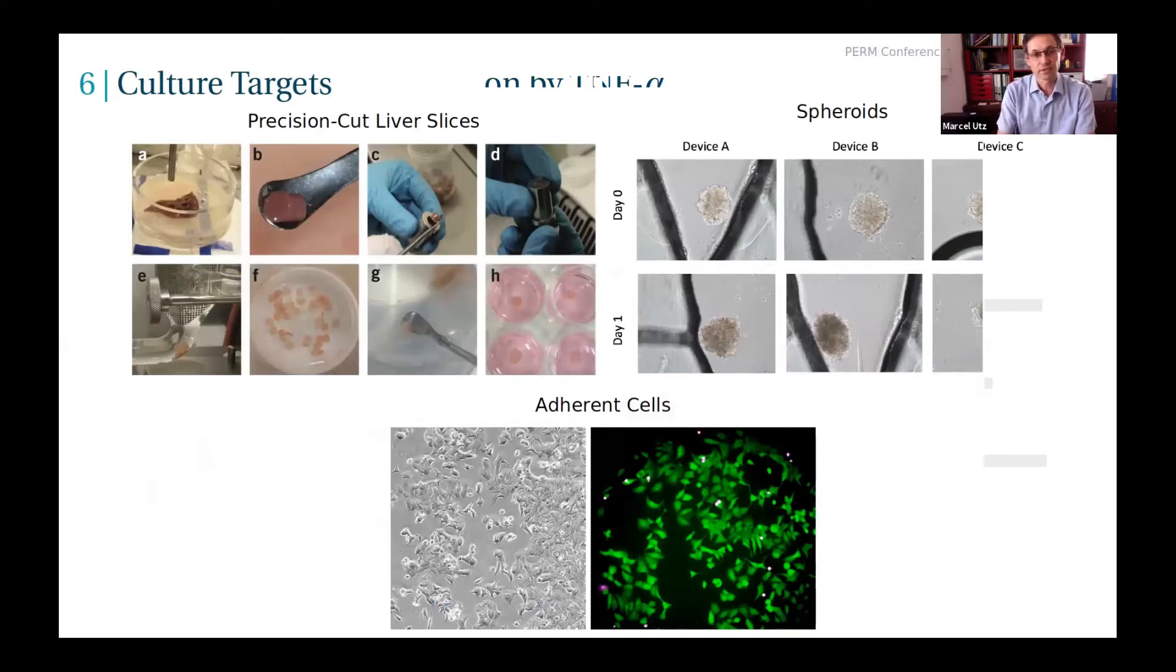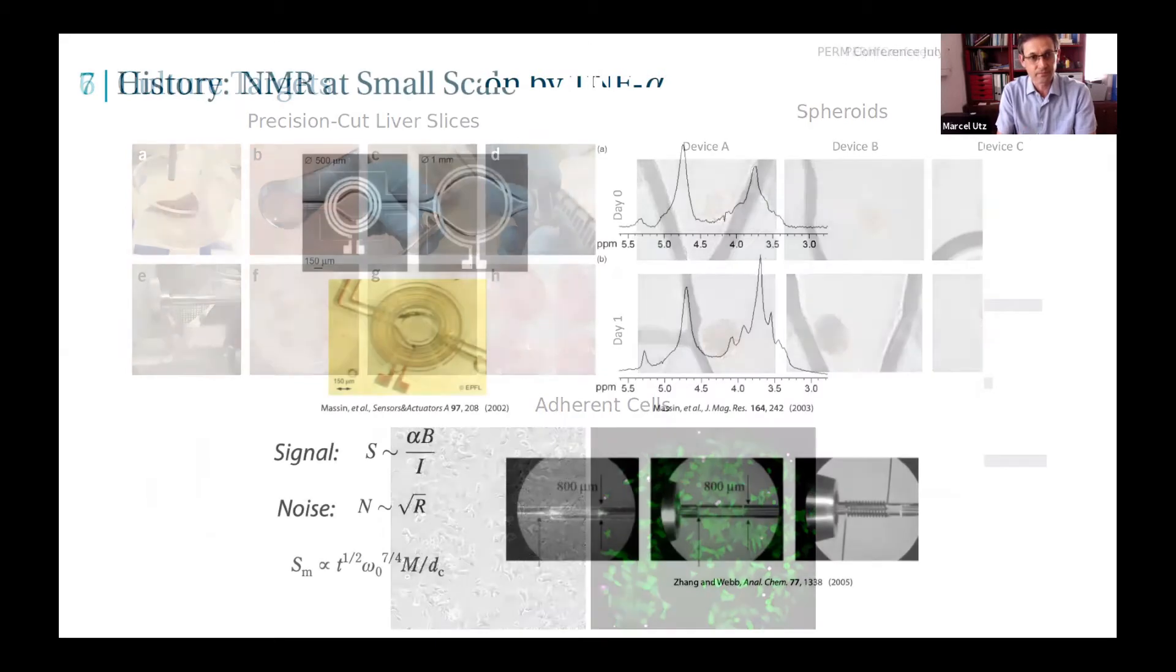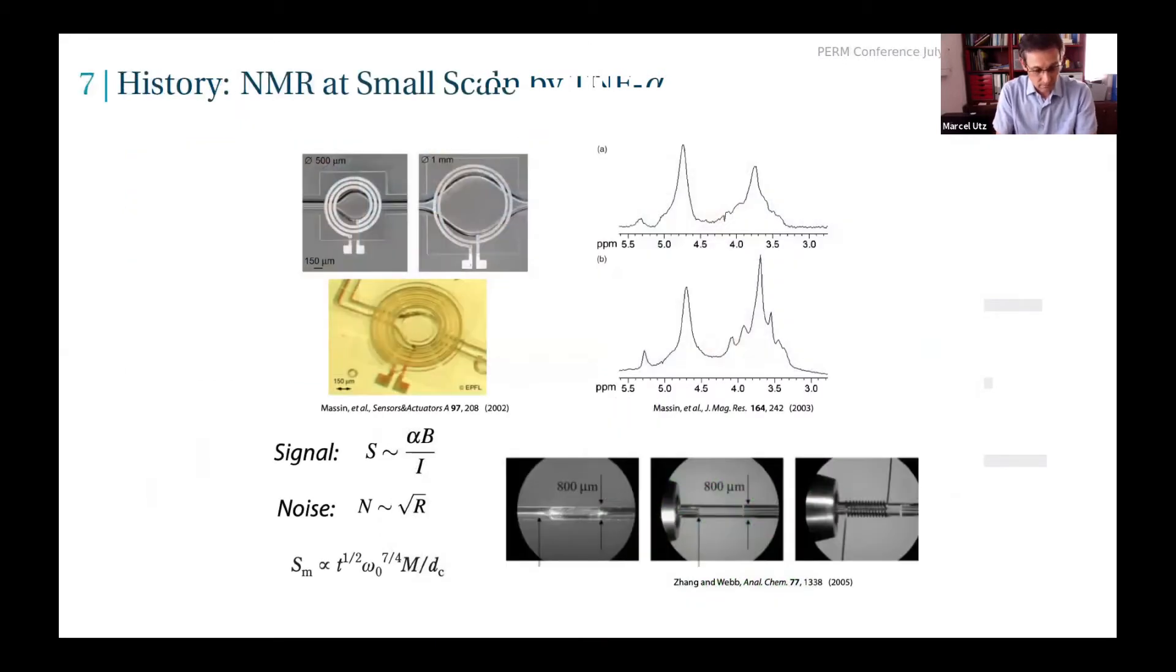What we're trying to do is combine the advantages of NMR with the promise of microfluidic systems in order to study things like tissue slices, but also self-organized groups of cells, spheroids, or just adherent cell cultures.